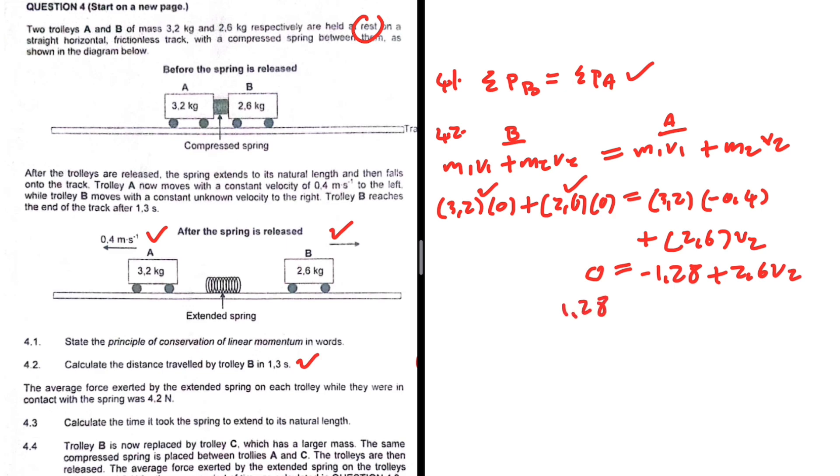1.28 is equals to 2.6v2. We didn't take 1.28 to the left hand side, we added 1.28 to both sides. We cannot take things in math, but anyway let's carry on. v2—divide both sides by 2.6. Right, so v2 is equals to, what is 1.28 divided by 2.6?